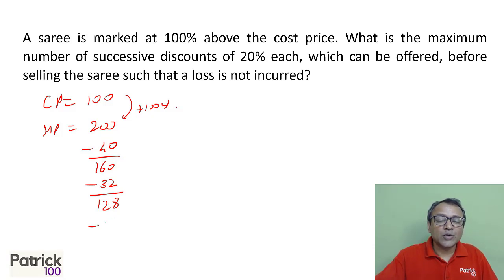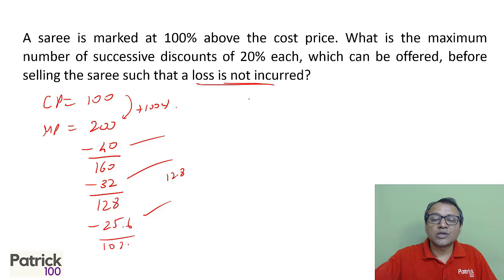So you will get 25.6. This will give you 102 point something. And now, next, if I give a discount, it becomes below cost price. So I can offer three discounts, three times discount. So the loss is not incurred. So 3 is the answer. The moment I have given more than 3, the price will go below 100, loss will be incurred. So 3.